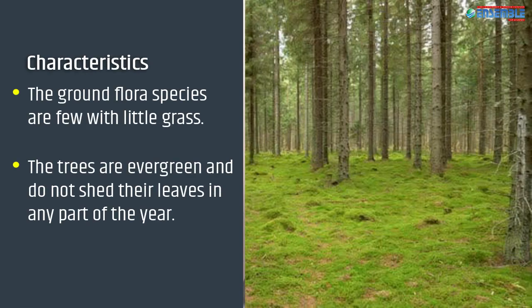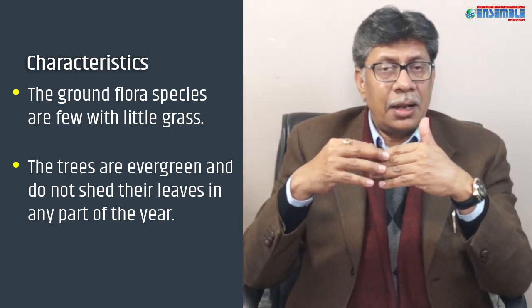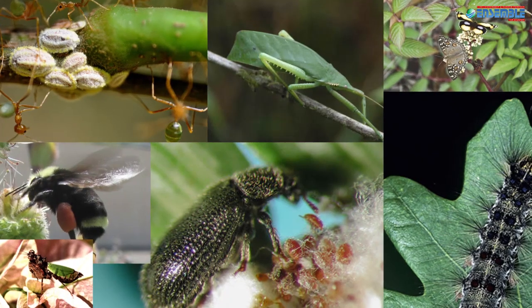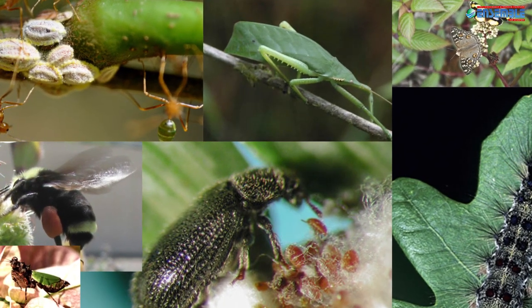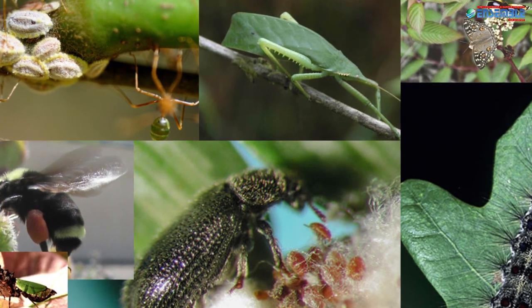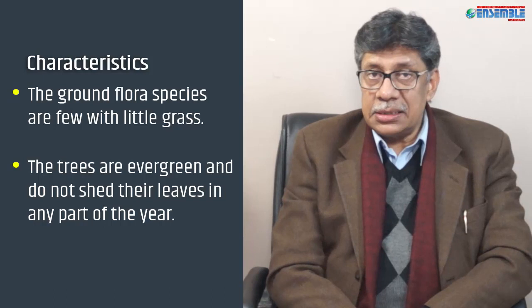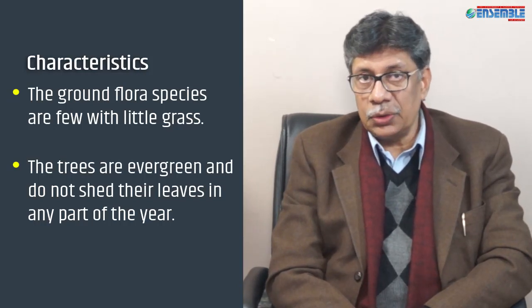The sixth characteristic is that ground flora species are few, with little grasses — such grasses are found only near margins. The seventh characteristic is that since there is an abundance of moisture, the trees are evergreen and do not shed their leaves in any part of the year. Even if they do shed leaves, it occurs as synchronous shedding.